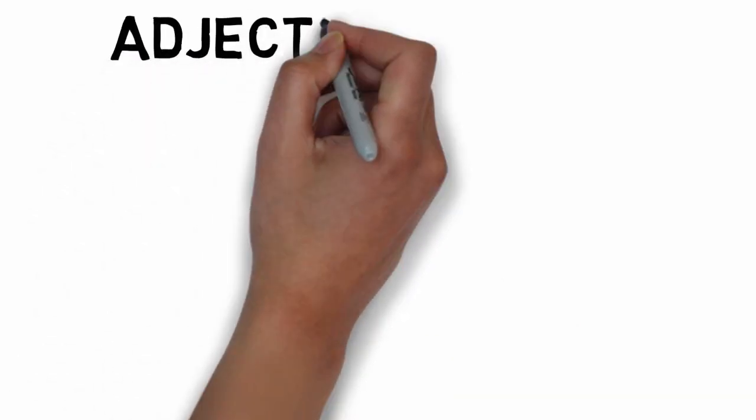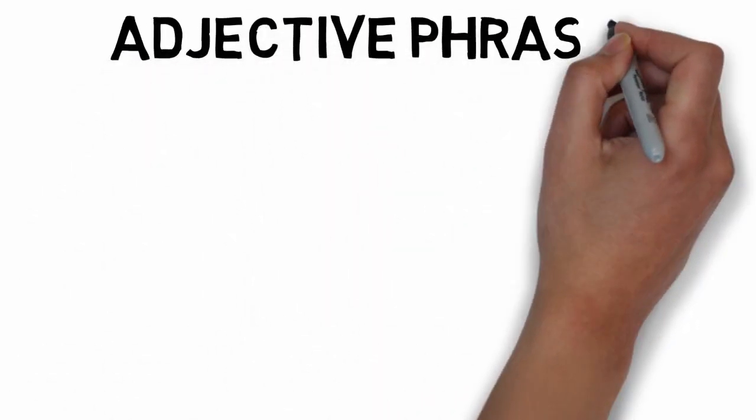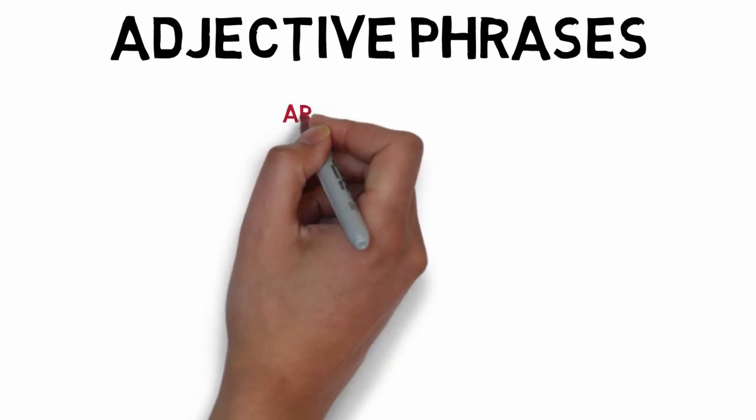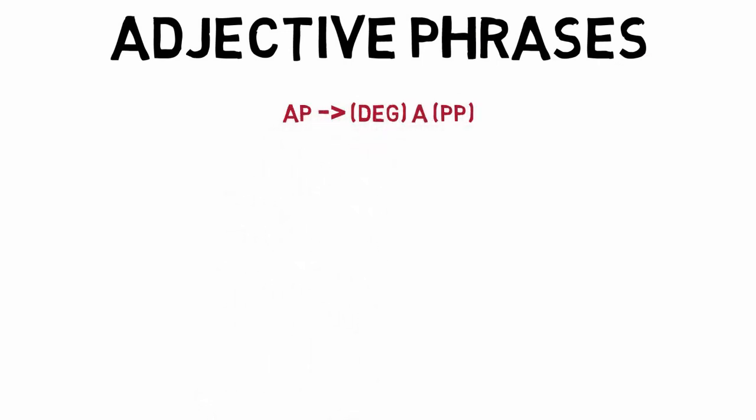Next up, let's look at adjective phrases. Adjective phrases are made up of an optional degree word, only one of them, an obligatory adjective, and an optional prepositional phrase, but only one of them.